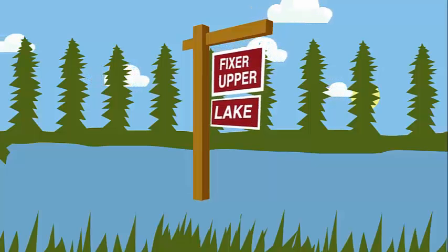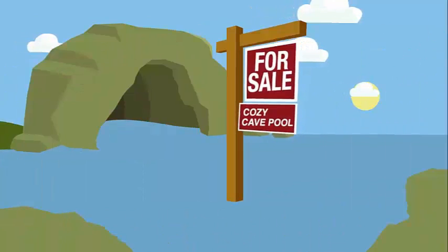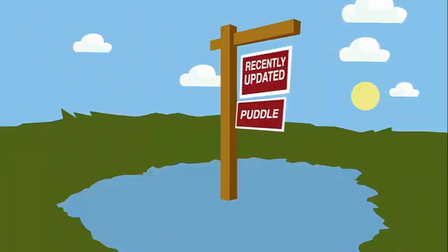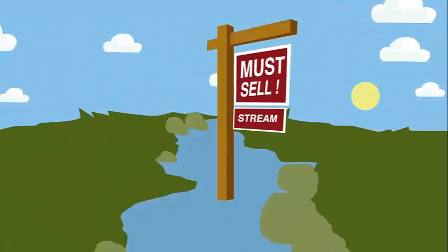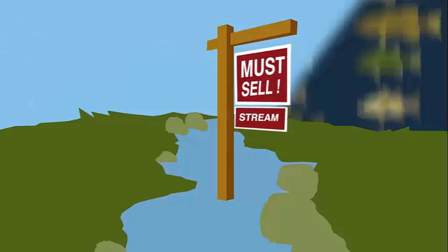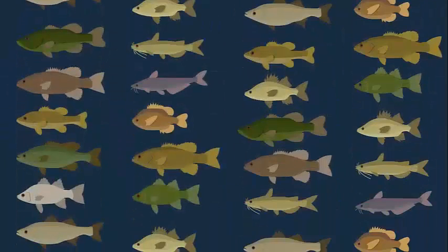Freshwater habitats are like islands of water in a sea of land, so each island can be very different from the next, requiring fish to adapt accordingly. Which helps explain why 40% of all the fish species on Earth live in freshwater ecosystems.